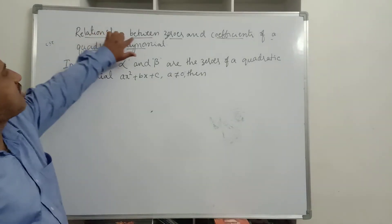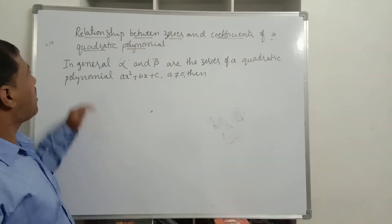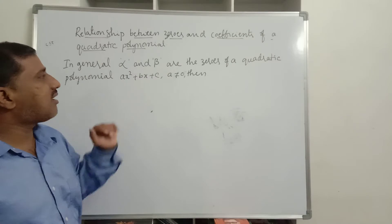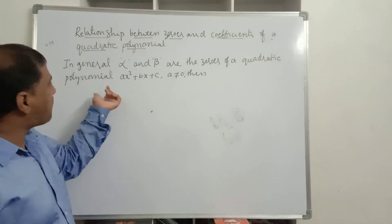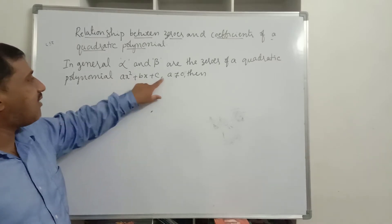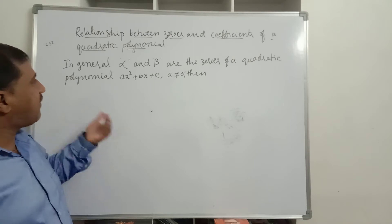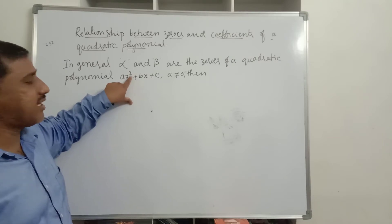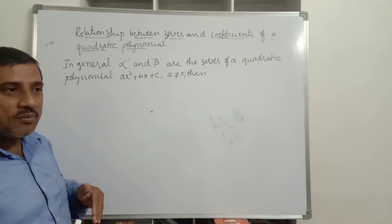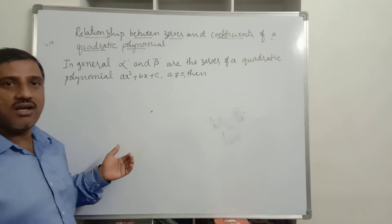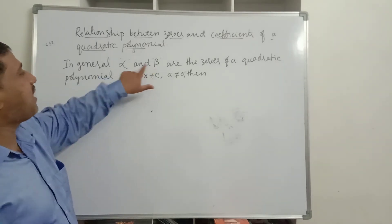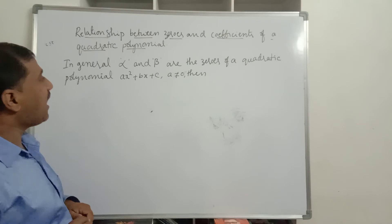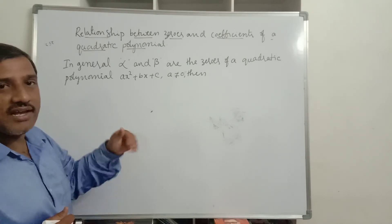Now we will discuss the relationship between zeros and coefficients of a quadratic polynomial. Let alpha (α) and beta (β) be the zeros of the quadratic polynomial. The general form is ax² + bx + c, where a ≠ 0, and its degree is two. Since the degree is two, there are at most two zeros — let those be alpha and beta.